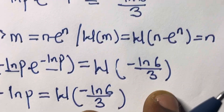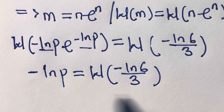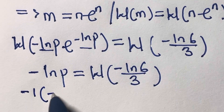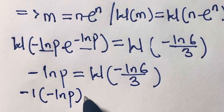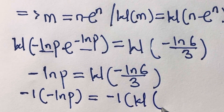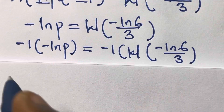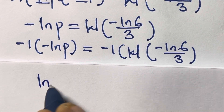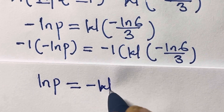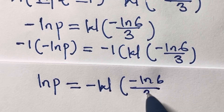We want to find p, so we multiply both sides by minus 1. That gives us minus 1 times minus ln(p) equals minus 1 times W(minus ln(6)/3). Therefore ln(p) equals minus W(minus ln(6)/3).